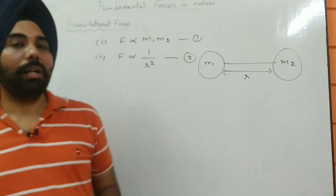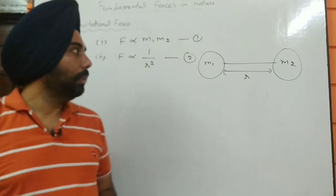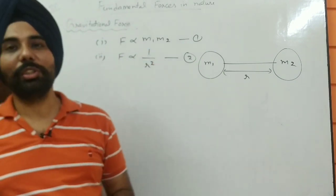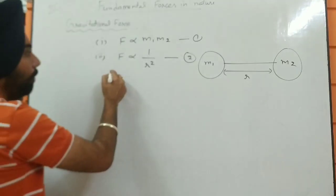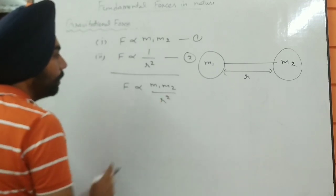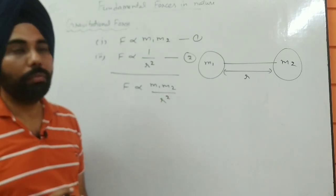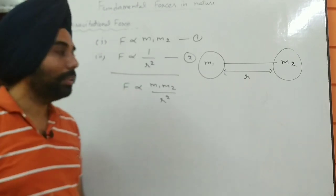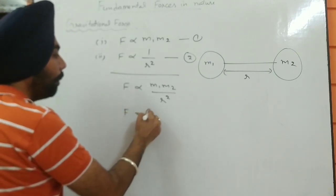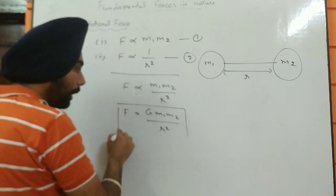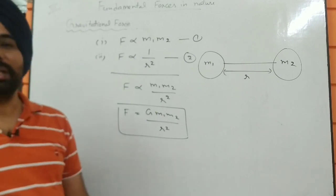These two lines are from the statement of gravitational force: first, the force is proportional to the product of masses; and second, it is inversely proportional to the square of the distance between them. Combining these two factors, we get F ∝ m1·m2/r². To convert the proportional symbol into an equals sign, we introduce a constant, giving us F = G·m1·m2/r². This is known as Newton's Law of Gravitation, and capital G is known as the universal gravitational constant.